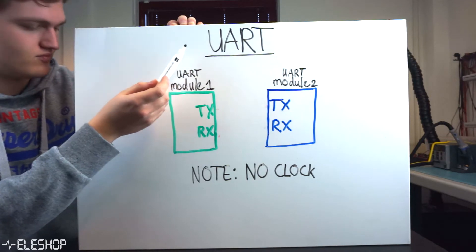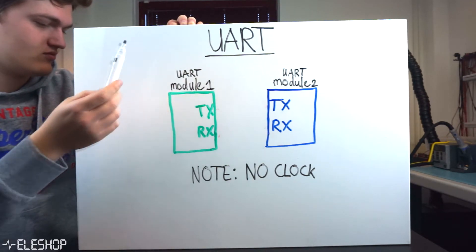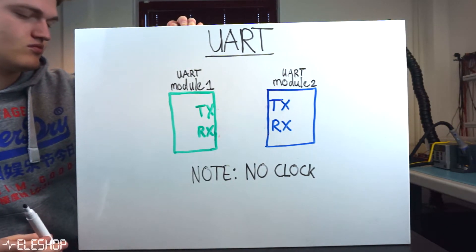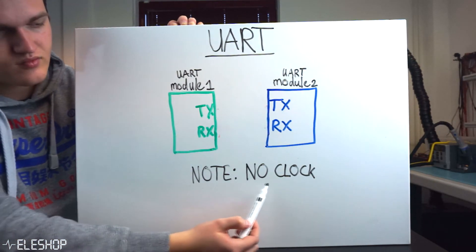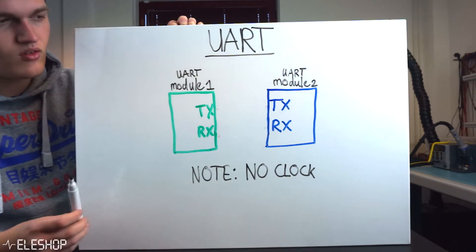Next we have UART, which is an acronym for universal asynchronous receiver transmitter. UART is asynchronous, so it does not have a clock line connected between two modules.